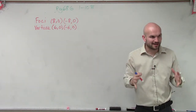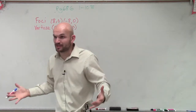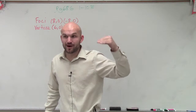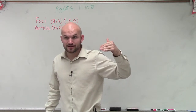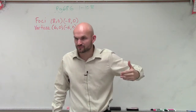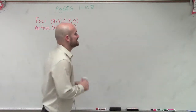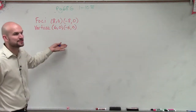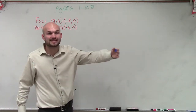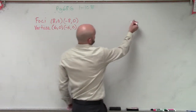So the first thing we need to do — as I talked about — we have two different formulas for a hyperbola: we had the x over the a, and then we had the y over the a. So we need to determine which formula we're going to use. The first thing to do is to make sure you plot your information to determine whether you're going to have a transverse axis that's horizontal or vertical. So let's plot the information we're given.